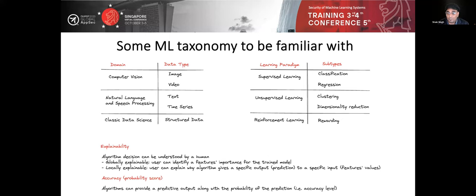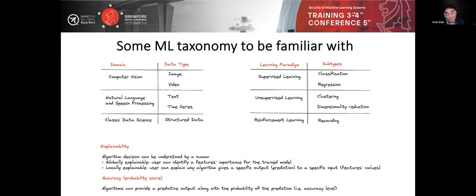When talking about machine learning it's important to understand some taxonomy. The domains include computer vision — where a camera looks at an image or video for processing — natural language and speech processing, which covers voice and written input and is where large language models sit, and classical data science. Notably, we're only covering two of the five typical human senses, which is one reason I believe we're quite far from AGI.